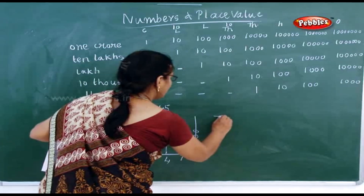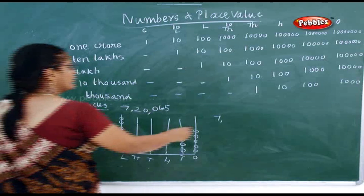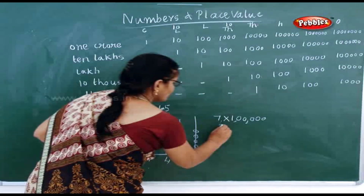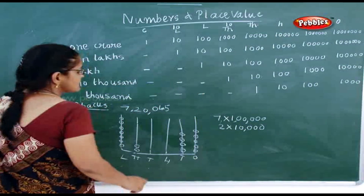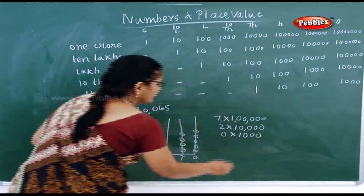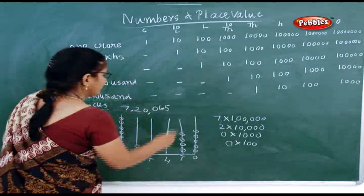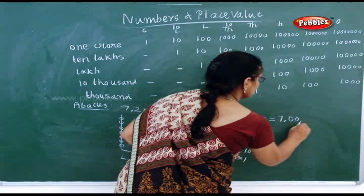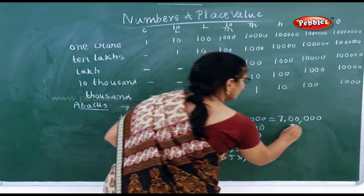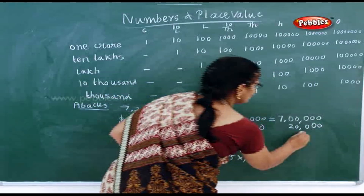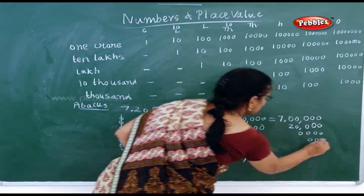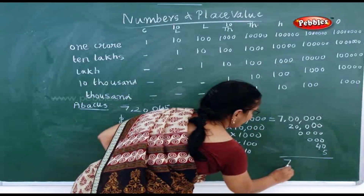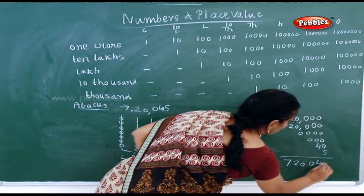Now how will you expand it? 7 lakhs — so write 7 × 1 lakh. Then 2 × 10,000. Then 0 × 1000. Then 0 × 100. Then 4 × 10. Then 5 × 1. So the number is 7,20,045.